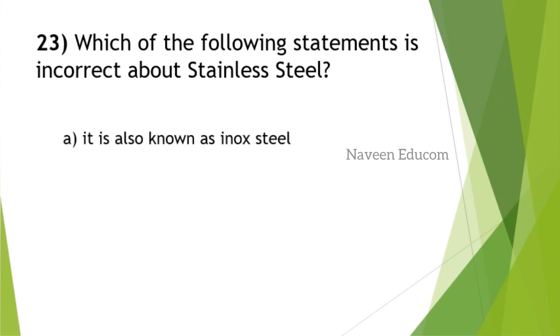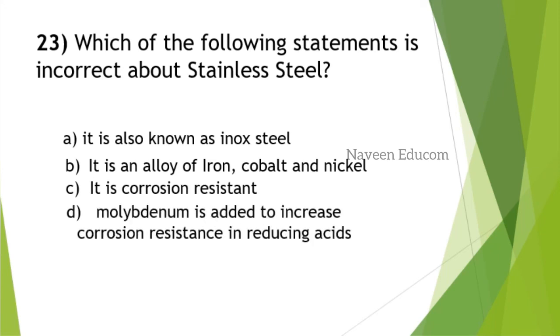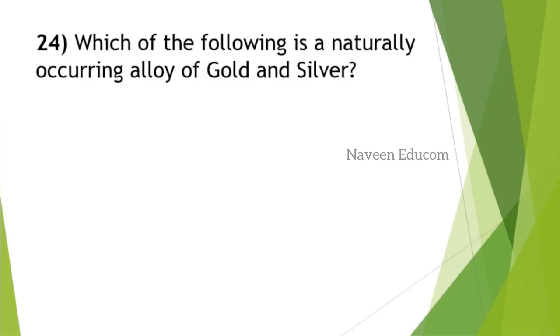Which of the following statement is incorrect about stainless steel? It is known as inox steel. It is an alloy of iron, cobalt, and nickel. It is corrosion resistant. Molybdenum is added to increase corrosion resistance in reducing acid. Which is incorrect? The answer is option B. Stainless steel, also known as inox steel, is an alloy of iron, chromium, and nickel, not cobalt. That is the mistake in the second sentence.